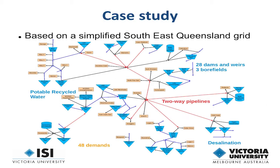A more detailed look at the framework shows that it takes into account the complexity of the system — forecast demands, forecast inflows, and so on are all incorporated into the optimisation. The team chose South East Queensland as a case study site, as it has many demands and multiple sources of water.